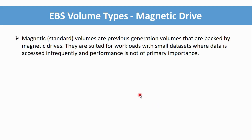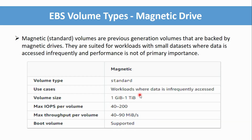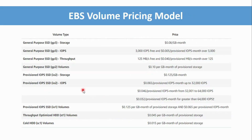For the Magnetic Drive, which is a previous-generation volume type, you cannot expect high performance. It's used when you just need to store older data for a longer period of time — then you can use magnetic tape. The volume type is called 'standard.' Use cases include scenarios where you don't need to access your data frequently.